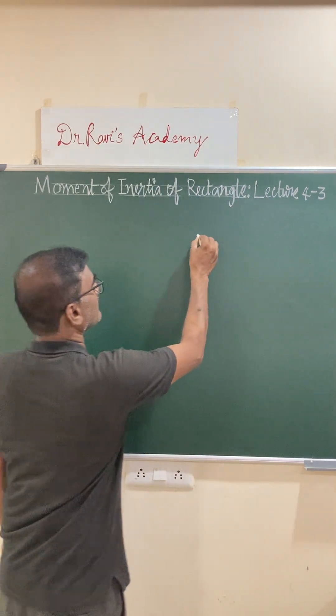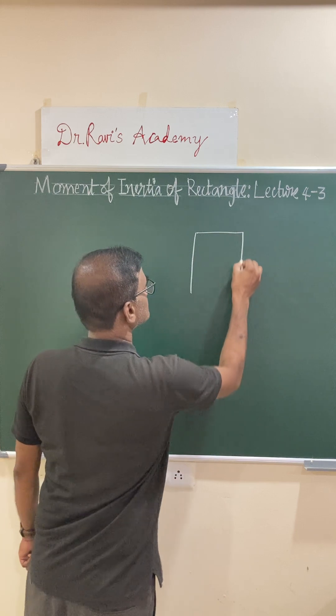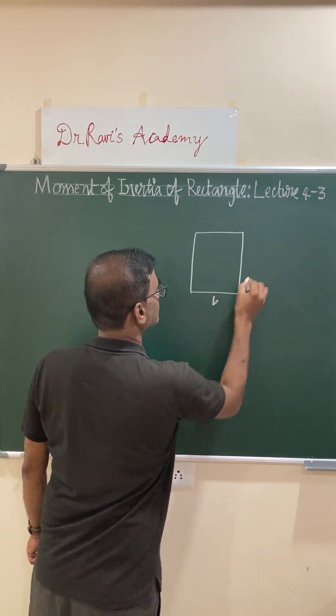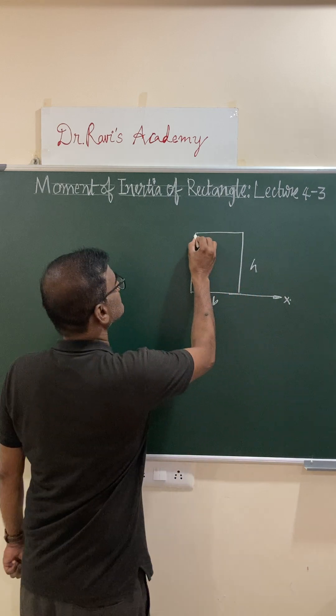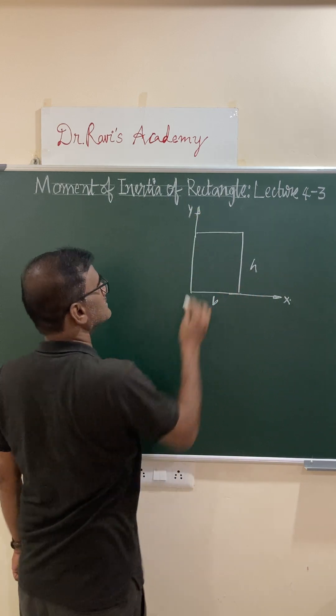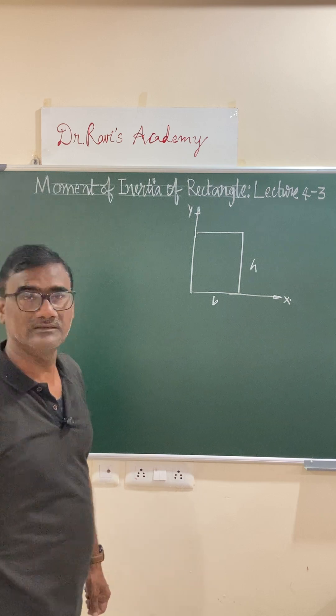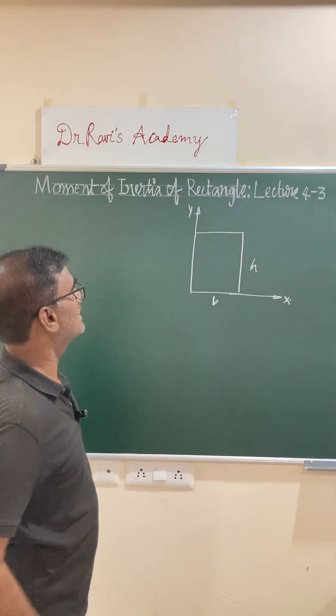Let us consider a rectangle of dimensions b by h, passing through the base is the x-axis. Let us say this is the y-axis, and about the x-axis, let us calculate the moment of inertia.